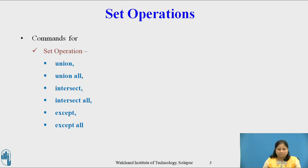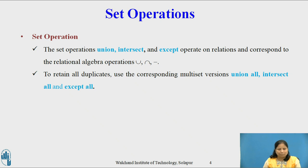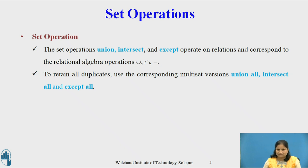The SQL Set operation is used to combine two or more SQL Select statements. The set operations Union, Intersect and Except operate on relations and correspond to the relational algebra operations Union, Intersection and Minus. To retain all duplicates, we use the corresponding multiset versions: Union All, Intersect All and Except All. The relations participating in set operations must be compatible, i.e., they must have the same set of attributes.